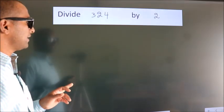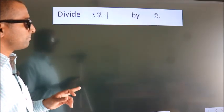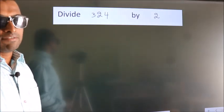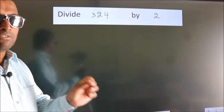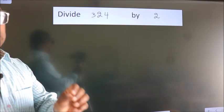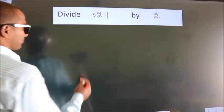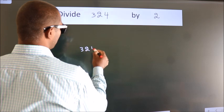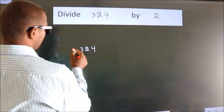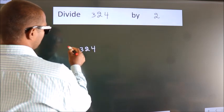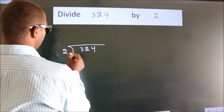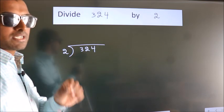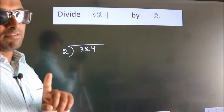Divide 324 by 2. To do this division we should frame it in this way: 324 here, 2 here. This is your step 1.